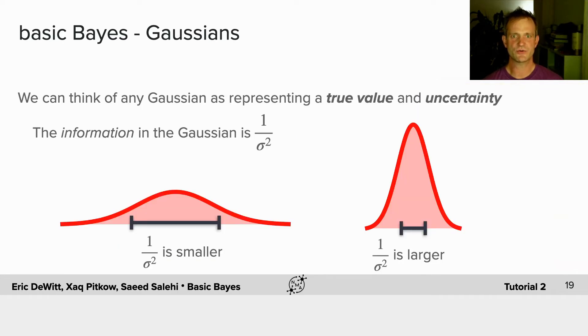We can think of the Gaussian as representing a true value and uncertainty. That is, the mean is the true value, and the uncertainty is the spread around it. The Fisher information in the Gaussian is one over the variance.